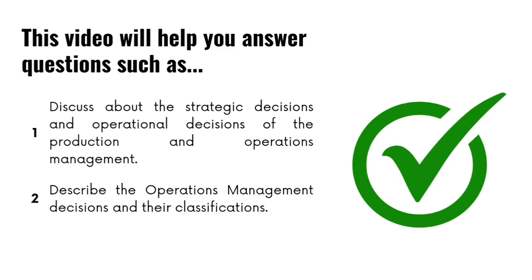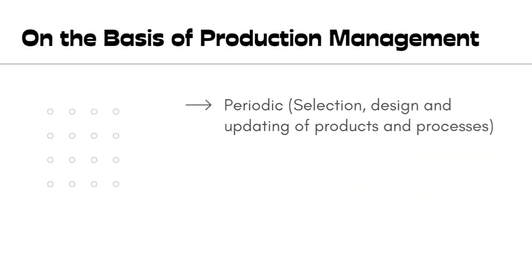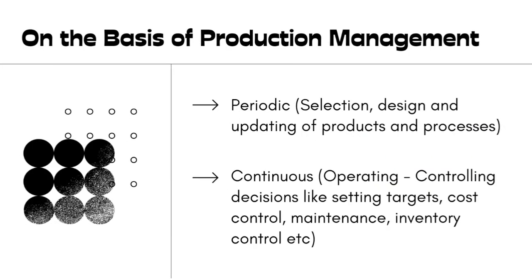Coming to our topic — operations management decisions. Operations management can essentially be considered as a process of planning, organizing, directing, and control. Managers have to take decisions on behalf of the organization in terms of all the managerial functions: planning, organizing, directing, control, and even staffing if you are in HR. These decisions can be grouped or classified in various ways.